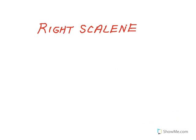A triangle can be classified by two or more of these things. For example, if we're asked to draw a right scalene triangle, that would be a right triangle where all three side lengths are different. I could make one of the legs kind of long and one kind of short, and the hypotenuse would have to be the longest side of all.